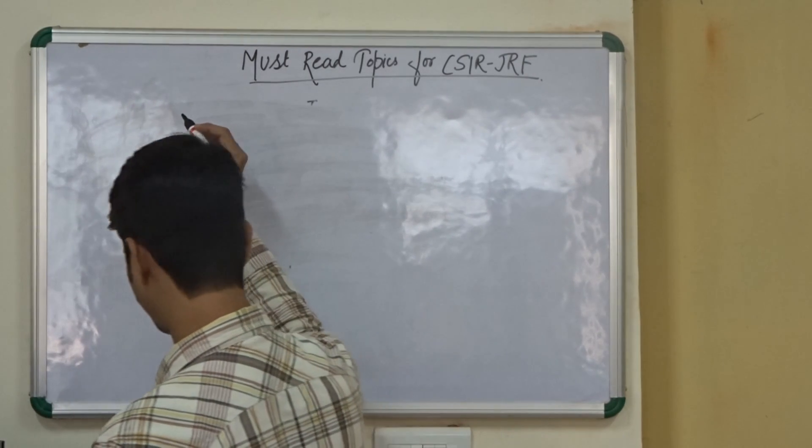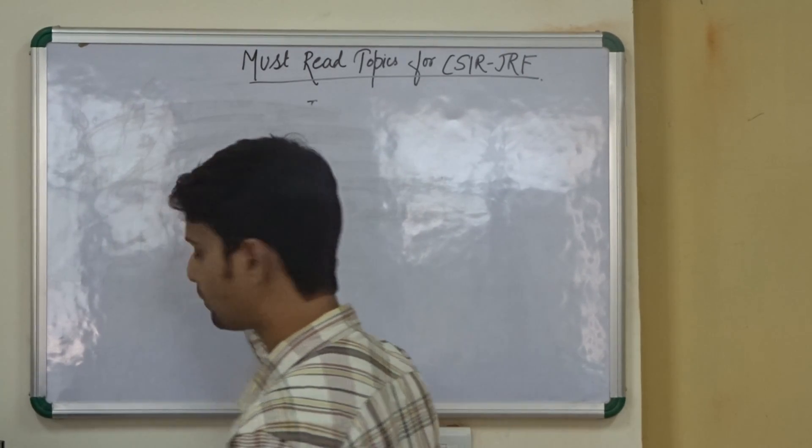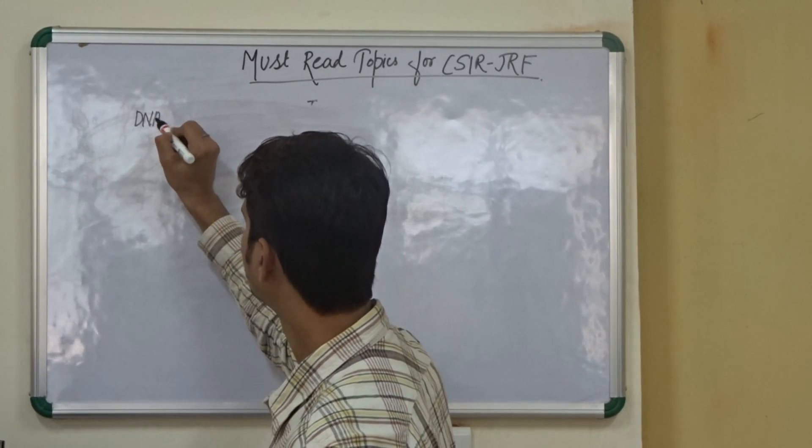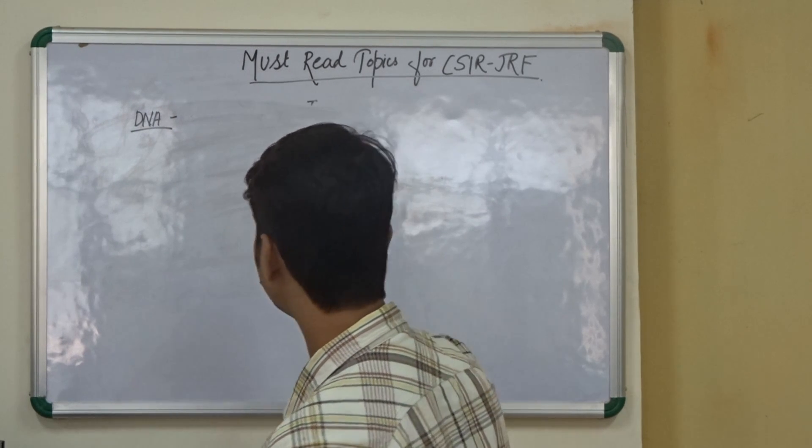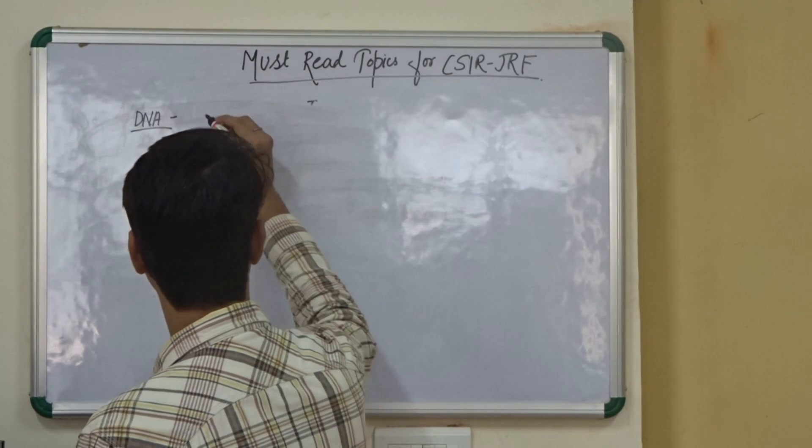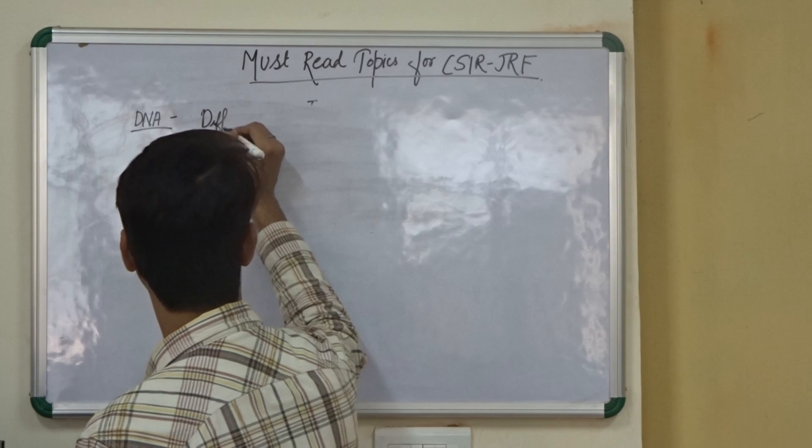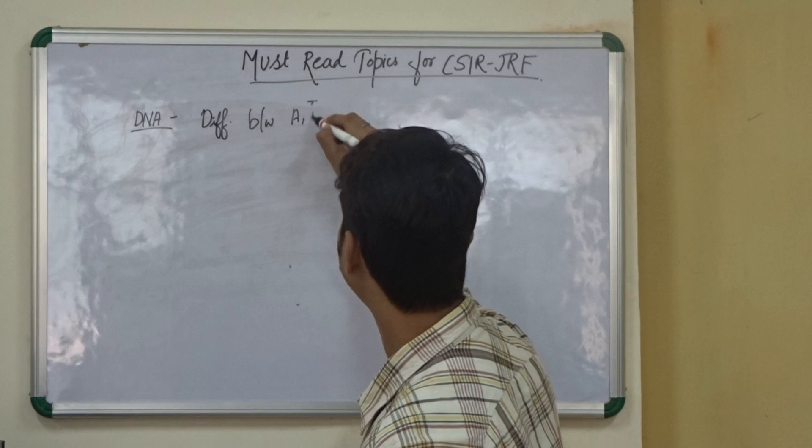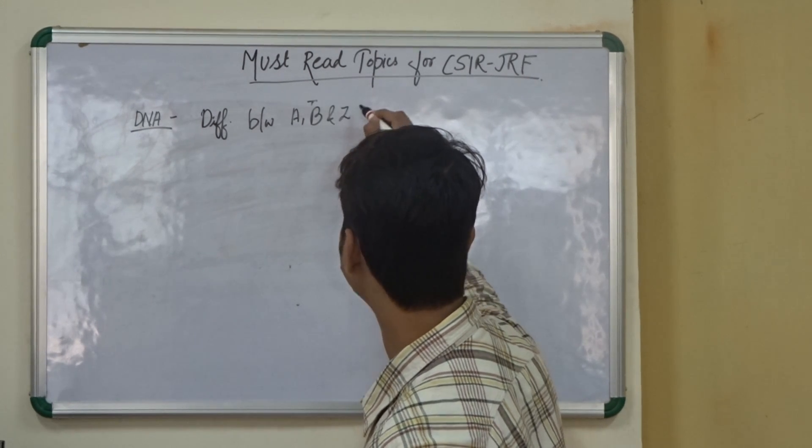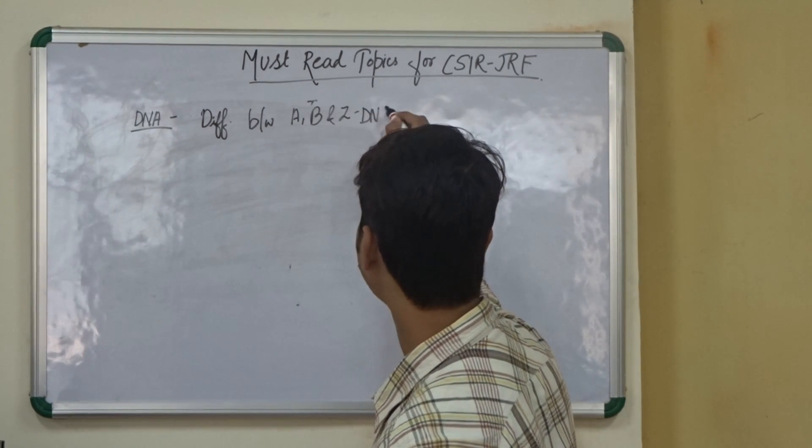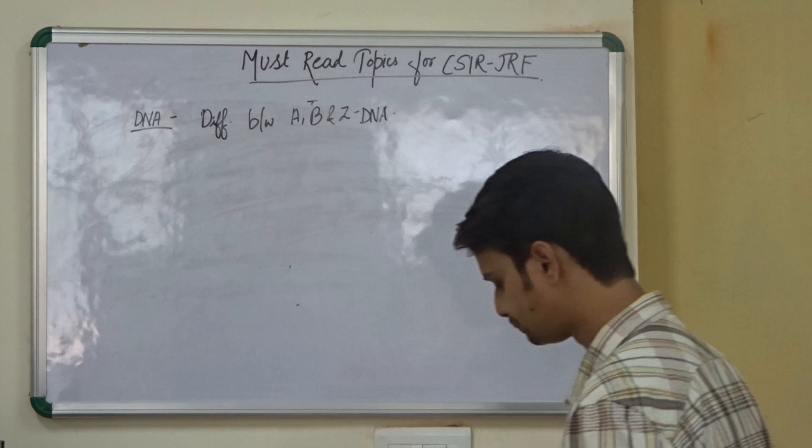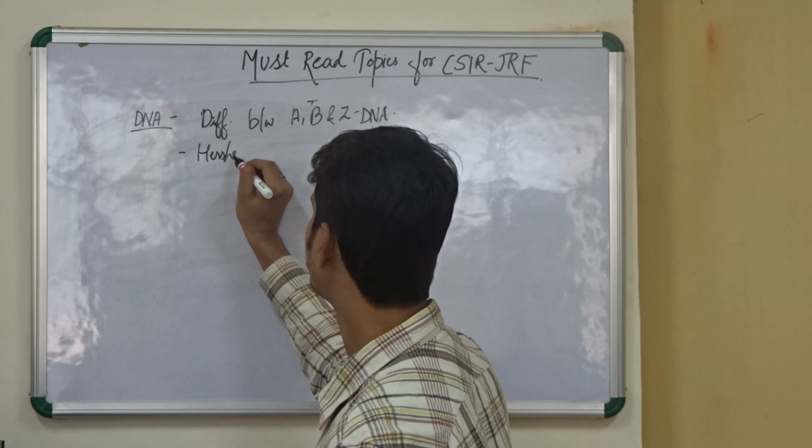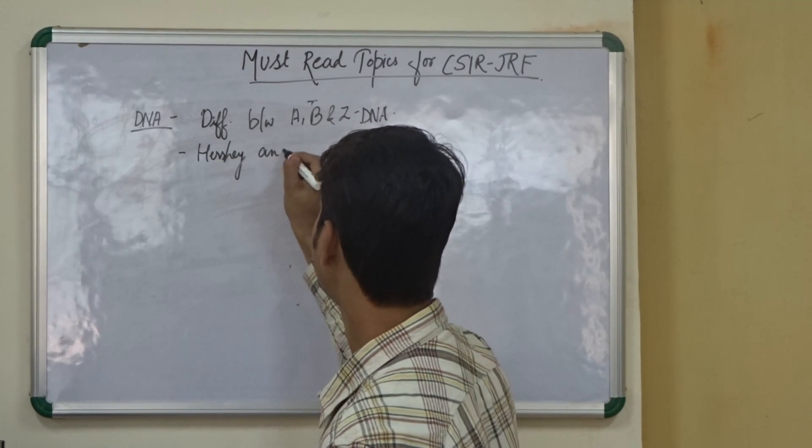The second unit, these are from the amino acid part, then from the DNA part. We need to know about the differences between A, B and Z DNA. Sometimes they ask about it. We also need to know about the Hershey and Chase experiments.